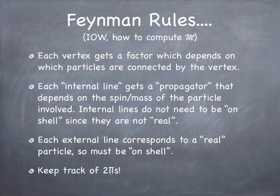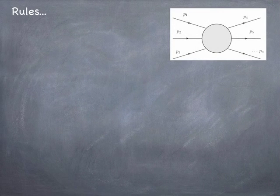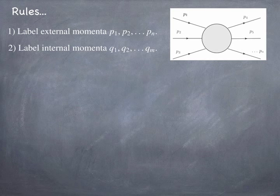Finally, we need to keep track of all the 2π factors. Now let's get to the nitty-gritty. For a definite process with particles coming in and going out, the first thing we do is label the momenta of all incoming and outgoing things with P's — P1, P2, up to PN. Then the internal momenta — momenta of particles inside the diagram that never actually leave — we label those with Q's, just to distinguish between the incoming/outgoing and the purely internal.